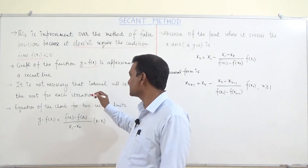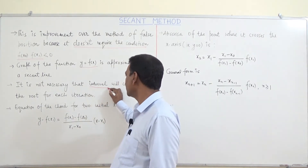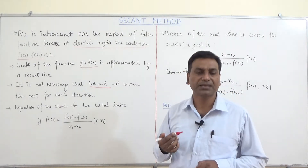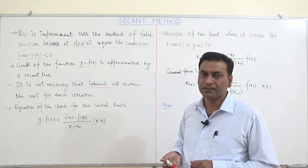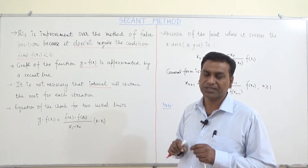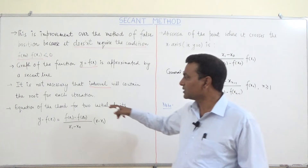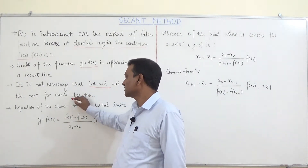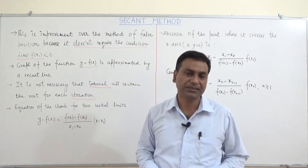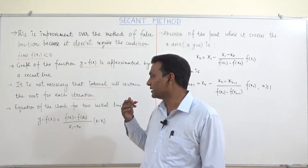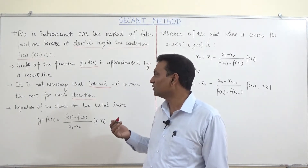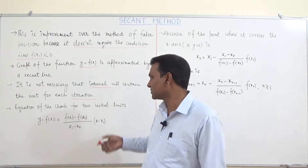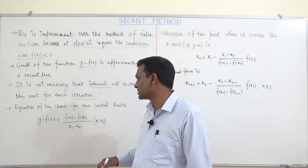It is not necessary that the interval we take at the start — the two initial values or initial limits — contains the root for each iteration. For a particular iteration, the root may lie outside the interval as well. This is a very important point.